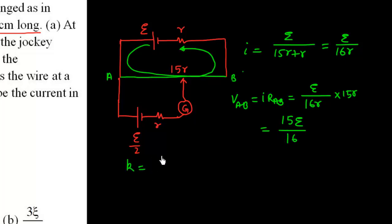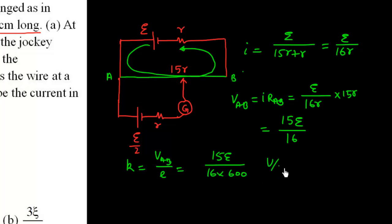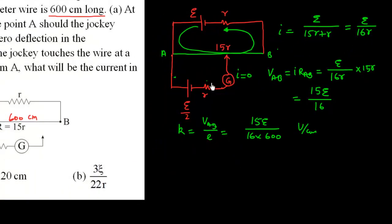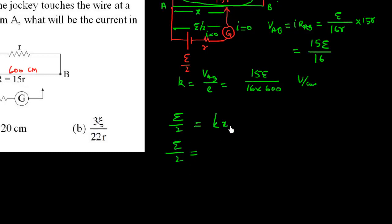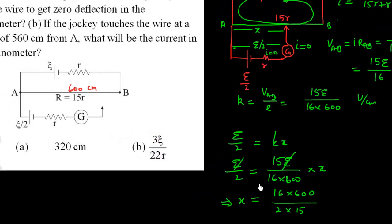K equals VAB upon its length. VAB is 15E by 16 and length is 600 cm. At null deflection, no current flows through the galvanometer branch. The voltage across that cell equals E by 2. So E by 2 equals KX, where X is the length to be calculated. E by 2 equals 15E upon 16 times 600 times X. E cancels out, giving X equals 320 cm.